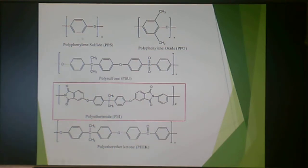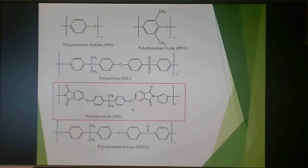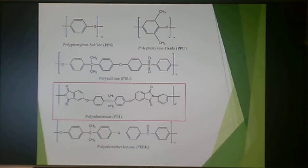We've gone over polyphenylene sulfide and polysulfone. Now we are on polyetherimide, and this actually does show a polyetherimide. This is an imide group right here — the nitrogen bonded to two oxygens, kind of like an anhydride, but there's an oxygen somewhere in the backbone as well. You'll often hear polyimides and polyetherimides used interchangeably. Polyimides may or may not have this oxygen in the backbone, but polyetherimides are the ones used commercially because the backbone oxygen adds flexibility, making them easier to process.